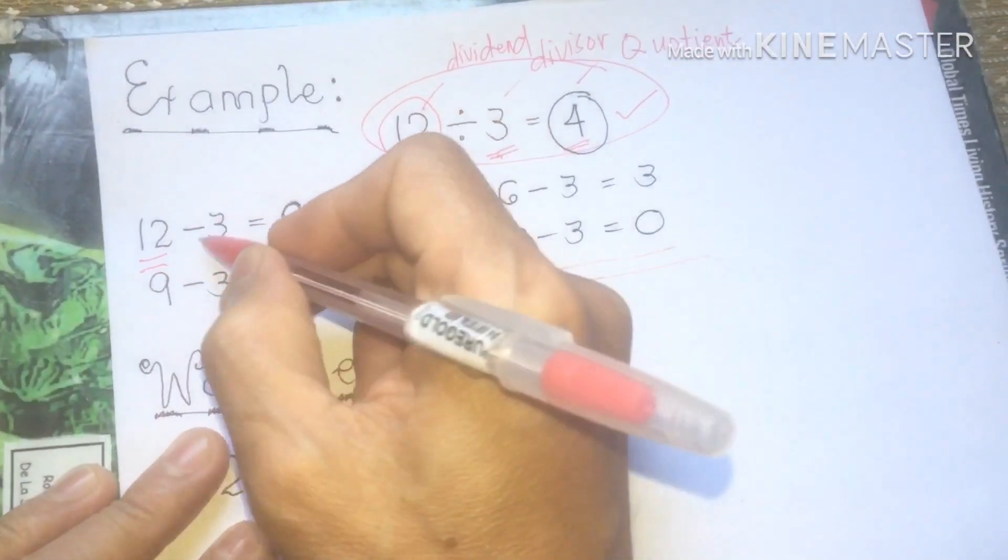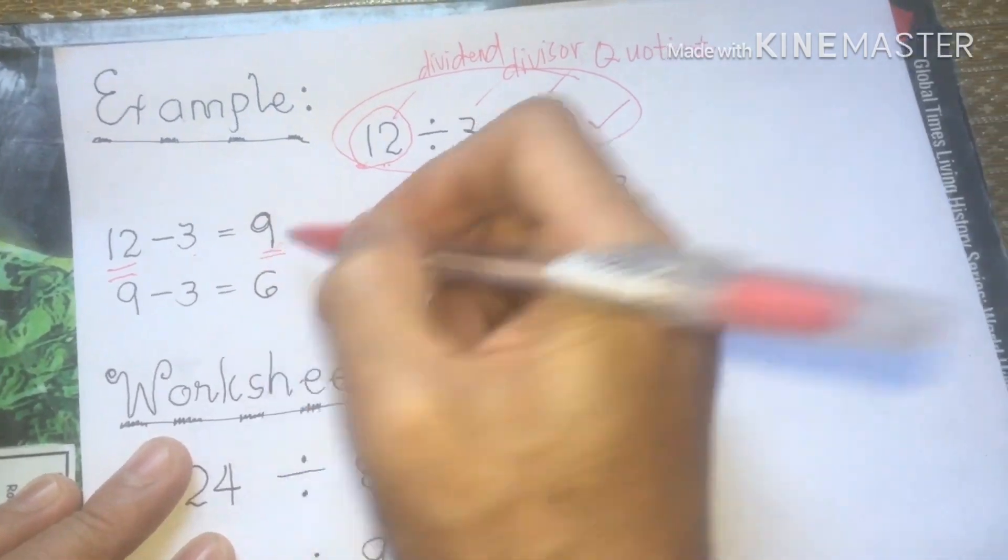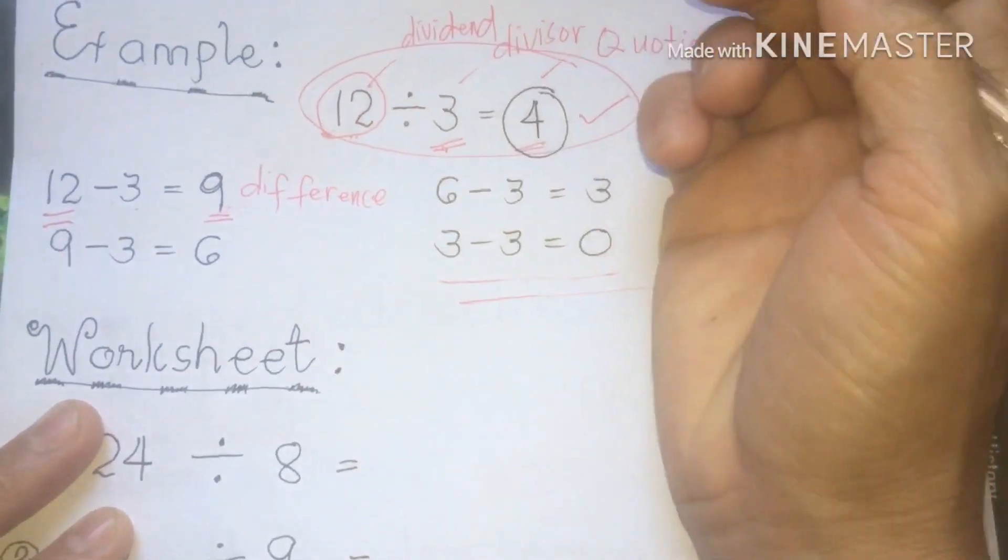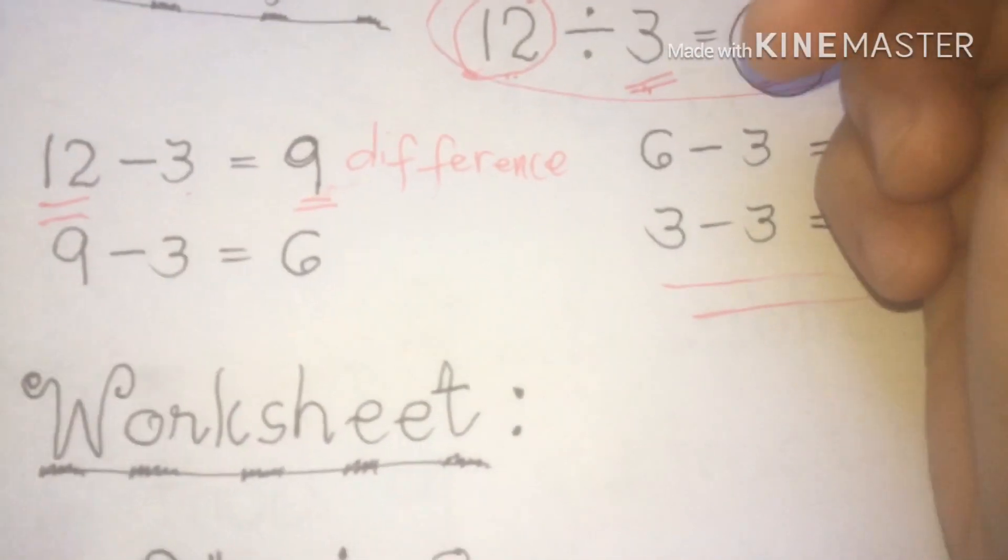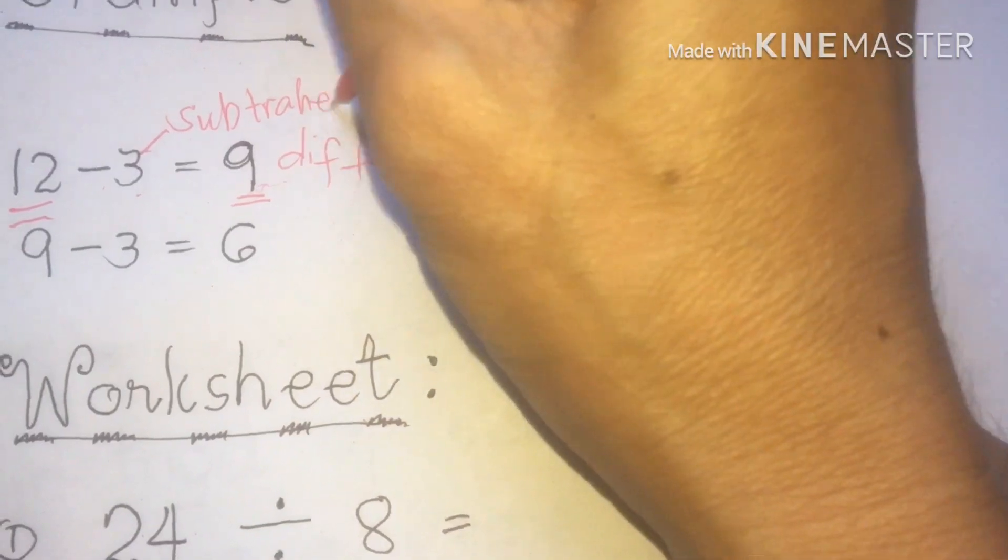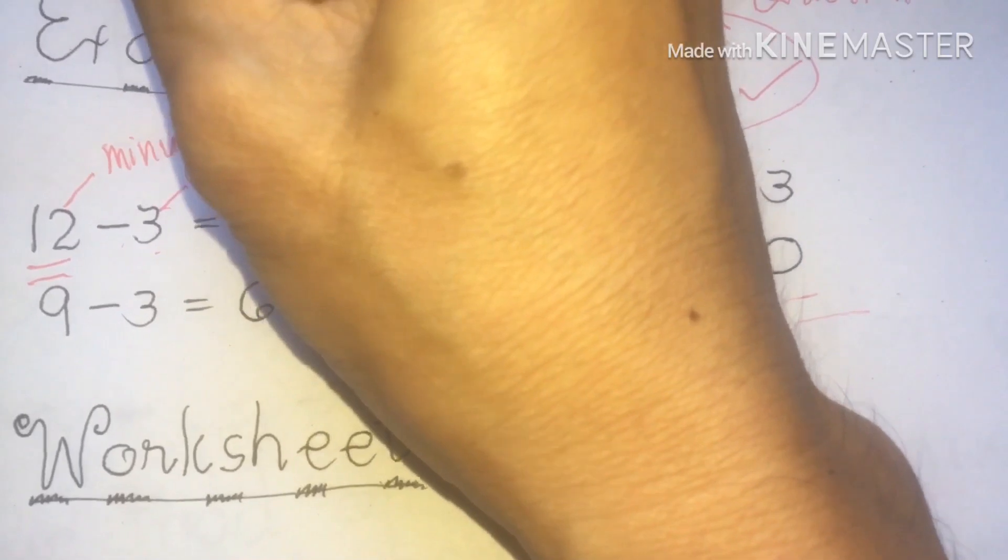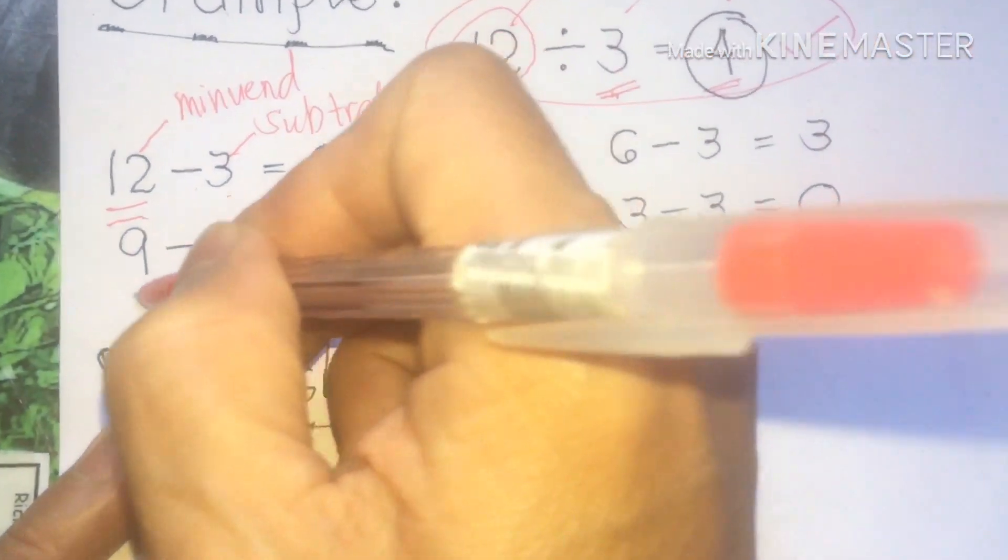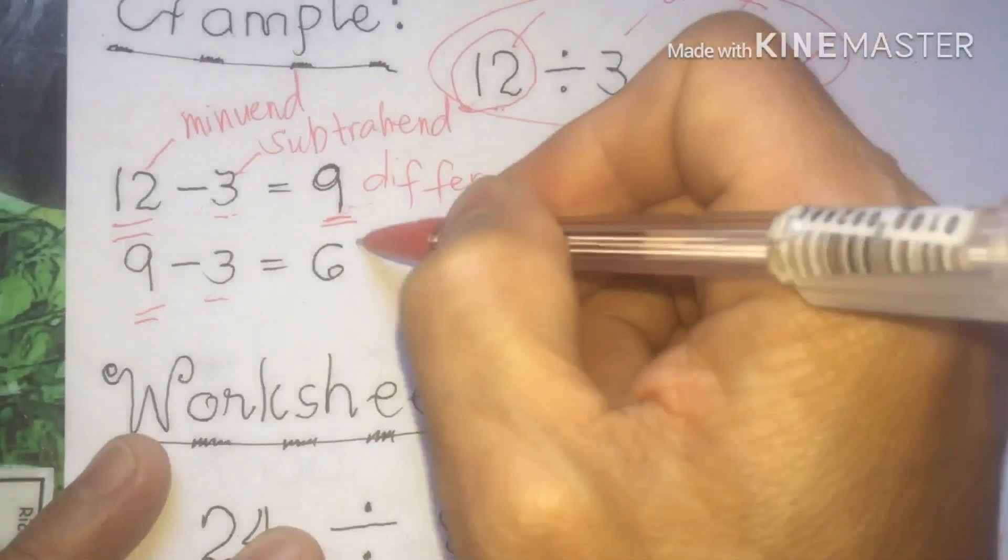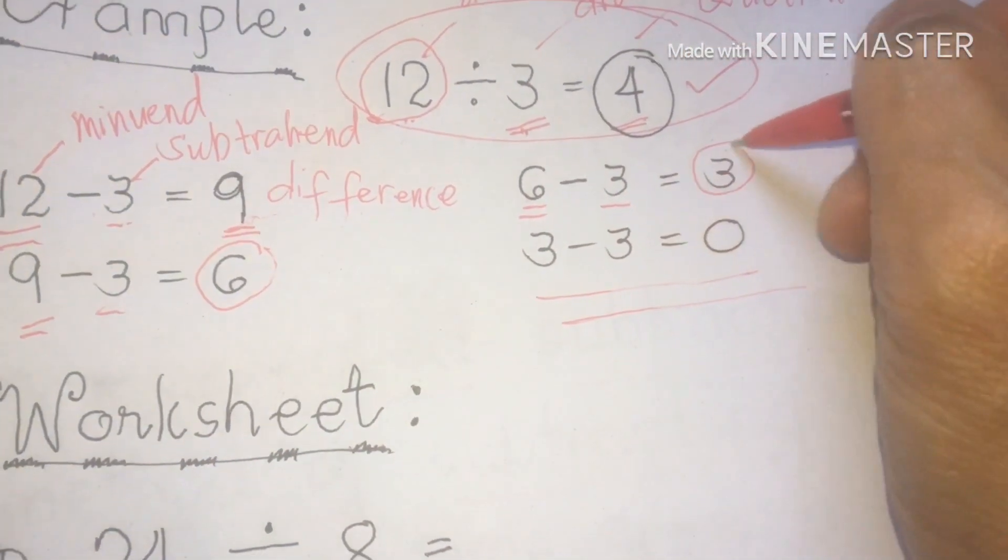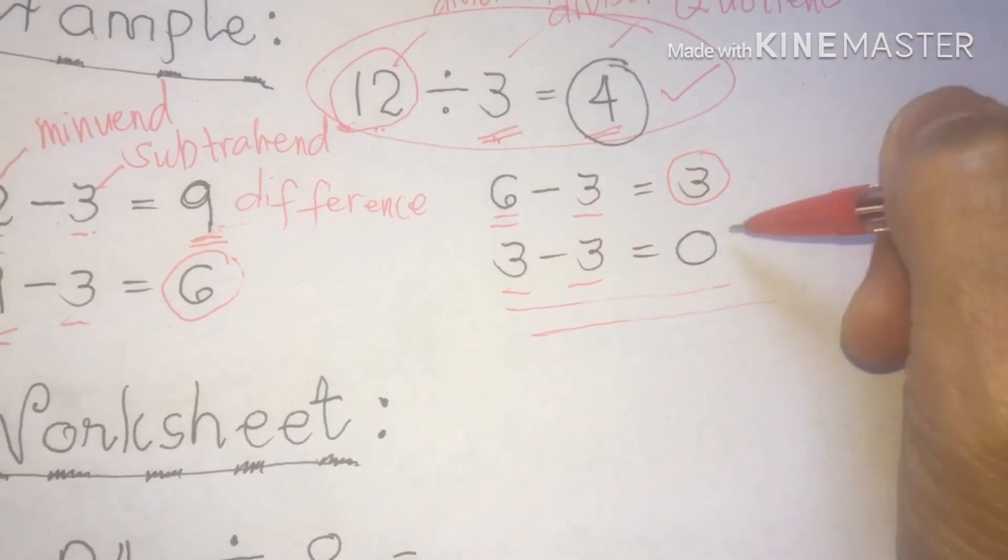Let us see. 12 minus 3 is equal to 9. This will be our difference. And 3 is our subtrahend. 12 is our minuend. Now, after that, we just continue. We just rewrite 9, subtract 3, the result is 6. Continue class. We write 6, minus 3, our answer is 3. 3 minus 3, our answer is 0.